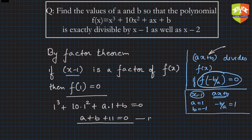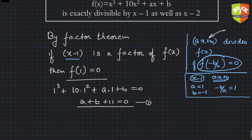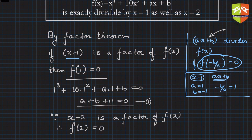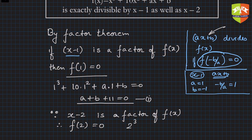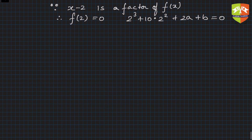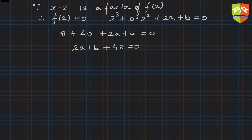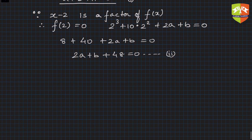Next, since x minus 2 is also a factor of f(x), f of 2 must also be equal to 0. So f of 2 is 2 cubed plus 10 times 2 squared plus 2a plus b equals 0. This gives 8 plus 40 plus 2a plus b equals 0, so 2a plus b plus 48 equals 0. This is equation number 2.